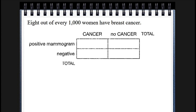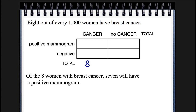You put the totals outside so you keep track of everything. Of the eight women with breast cancer, seven will have a positive mammogram. So that cell — that little box — contains those people who have both a positive mammogram and cancer. Those are the true positives. We subtract that from 1,000 women, so there are 992 who don't have breast cancer. We know from the information that 70 of those will still have a positive mammogram.